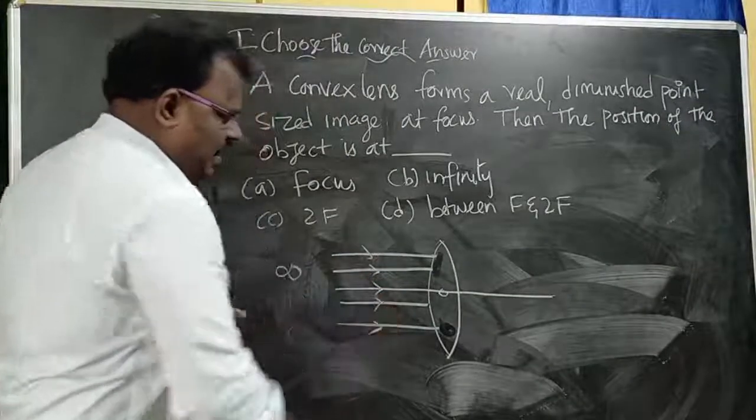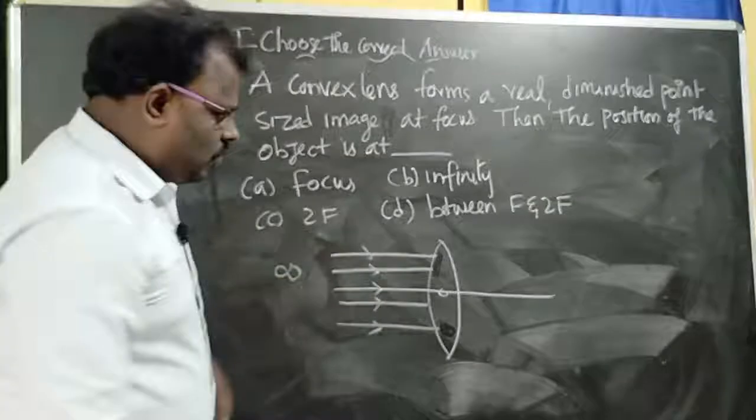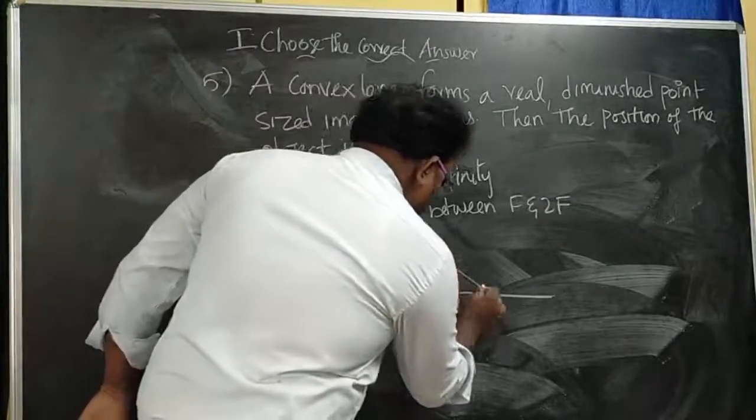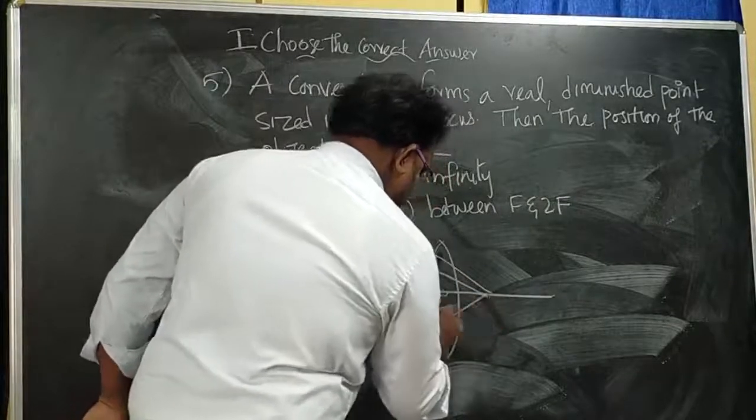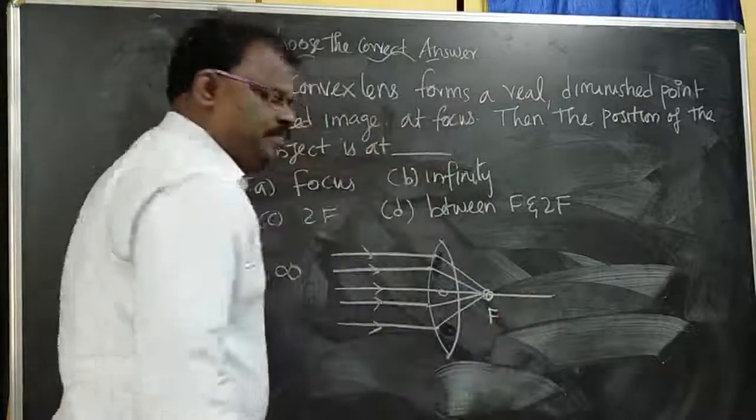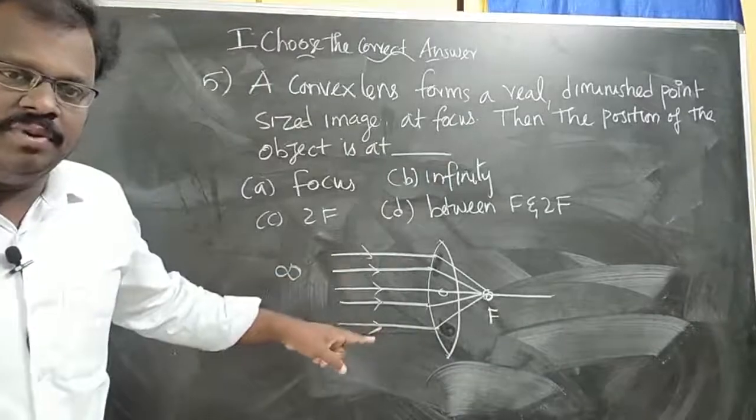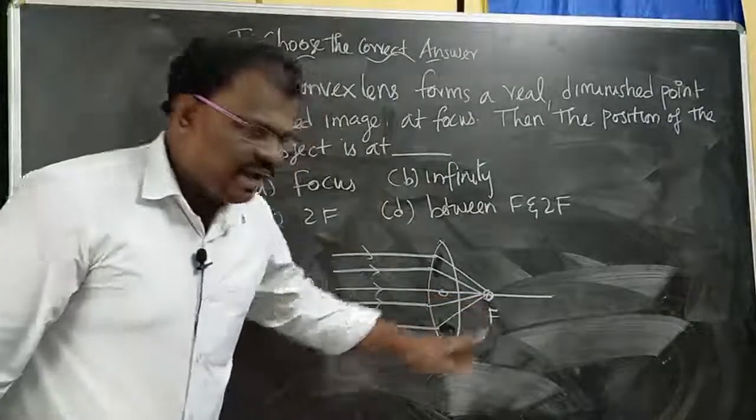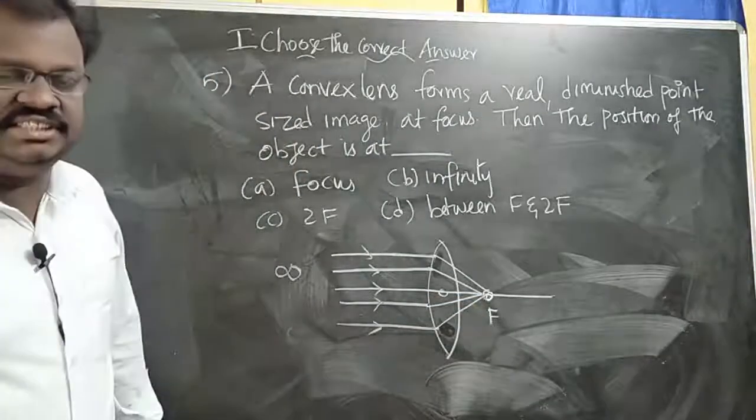The parallel beam of light passes through the lens and gets refracted. After refraction through the lens, the image formed is a point-sized image.